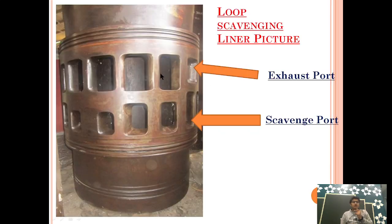Now let's see how a loop scavenging liner looks. As you can see, this is the scavenge port and this is the exhaust port. What is happening is that when the scavenge port is enclosed, some amount of the exhaust port still remains open, which can lower efficiency again.